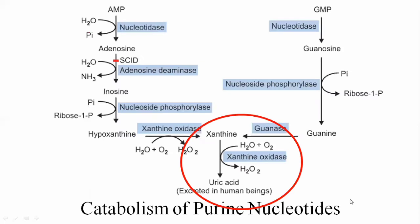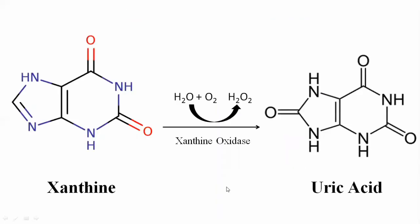Xanthine then acts as a substrate for xanthine oxidase again, and is converted into uric acid. Xanthine oxidase, in the presence of water and oxygen, produces hydrogen peroxide again and attaches an additional oxygen group. Now three oxygen groups are attached to the molecule, and xanthine is converted into uric acid. Uric acid is soluble and excreted through the kidneys in the urine.